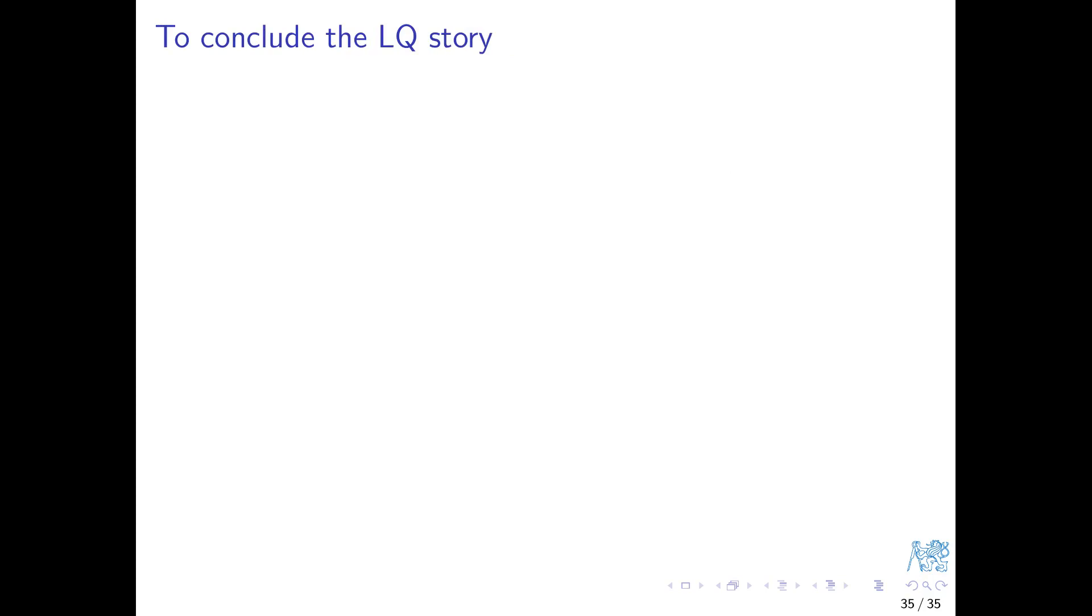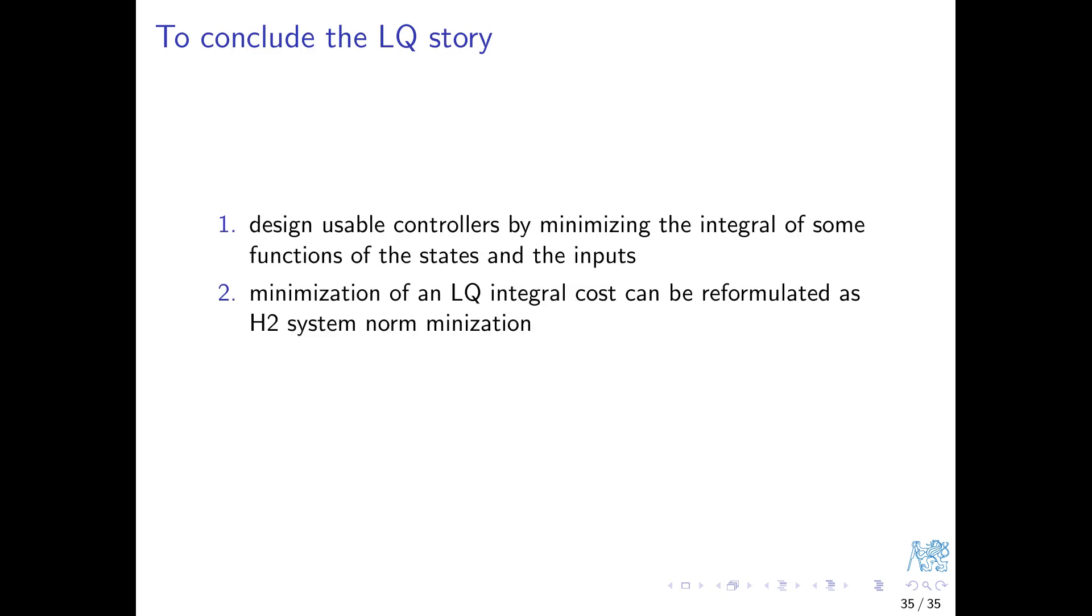This is essentially the end of our LQ story. We have not only learned to formulate control design problems in the optimization framework in which the cost function is an integral of some function of states and controls, but through this interpretation of the LQ optimal control as minimization of system norm, we finally arrived at an interesting question. And the question is: how about minimizing some other system norm? The same setup with the artificial generalized plant and a feedback controller using just a subset of its inputs and outputs, but just a different system norm. Can we gain something here? The affirmative answer to this question, the answer yes, will give us a program for the rest of the course. Thank you.